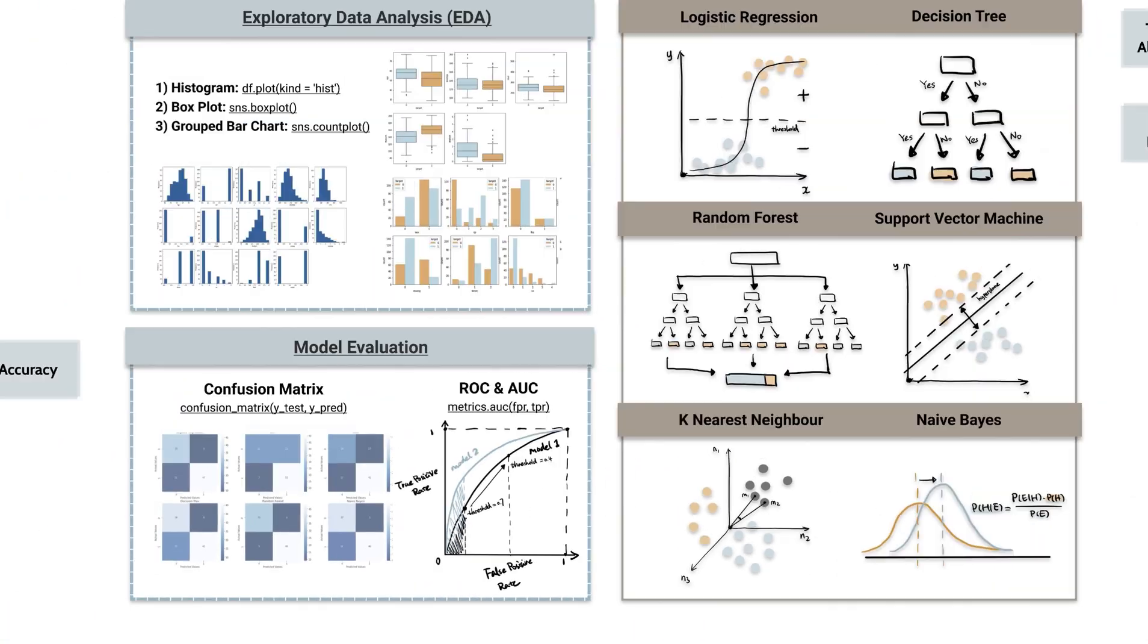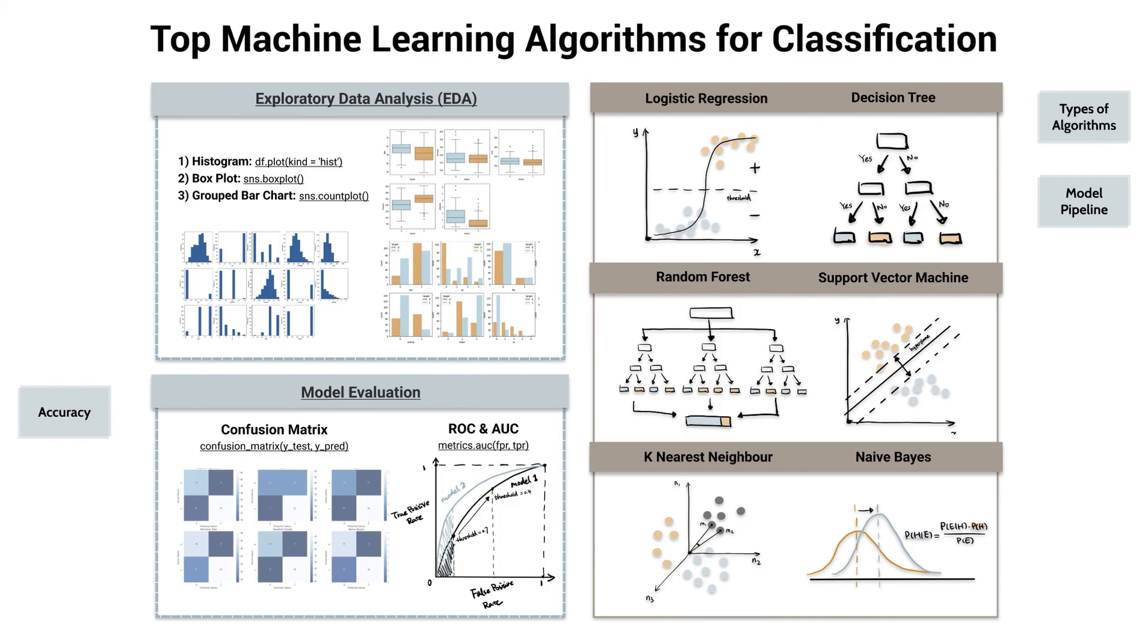Each algorithm has its own preference and requires different data processing and feature engineering techniques. For example, KNN is sensitive to features at different scales, and multicollinearity affects the result of logistic regression. Understanding the characteristics of each allows us to balance the trade-off and select the appropriate model according to the dataset.